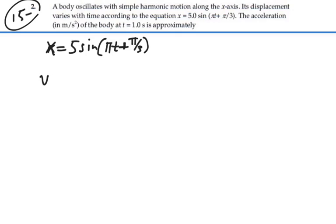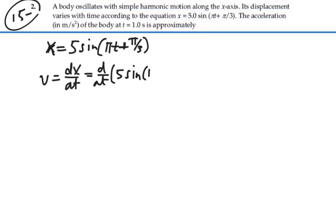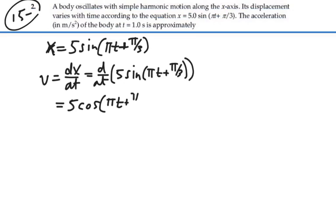Our velocity at any particular time is going to be the derivative of the position with respect to time. So that's going to be the derivative with respect to time of 5 sine of (pi t plus pi over 3). That's going to be equal to 5 — derivative of the sine is the cosine — so I have cosine of (pi t plus pi over 3).